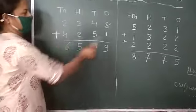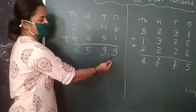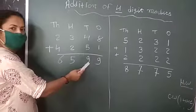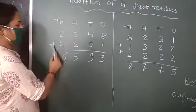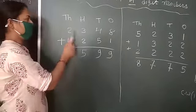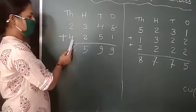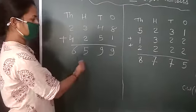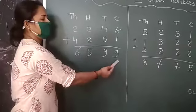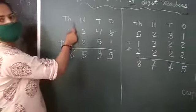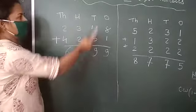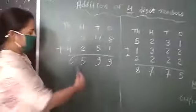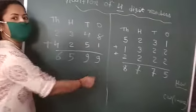Eight plus one is nine. Four plus five, nine. Three plus two, five. Two plus four, six. That number is six thousand five hundred ninety-nine.